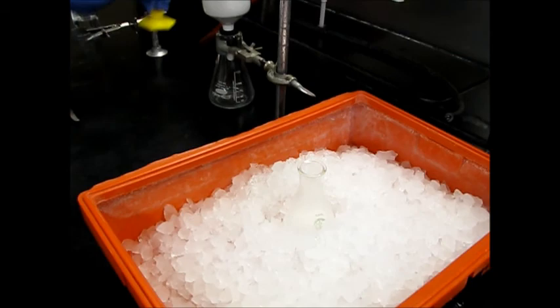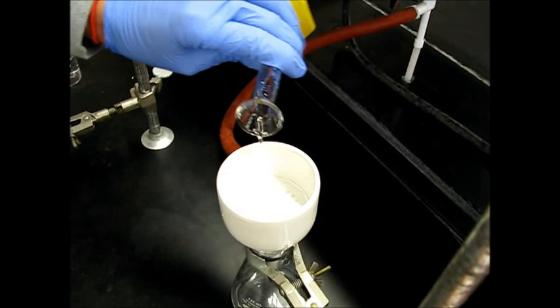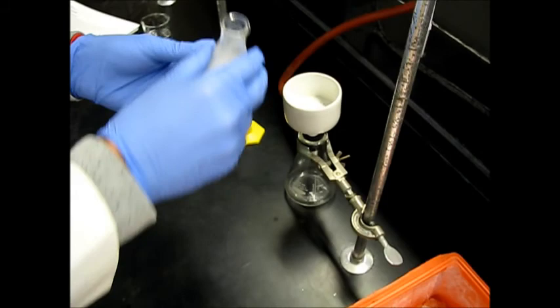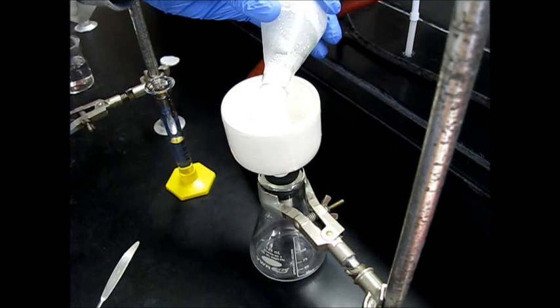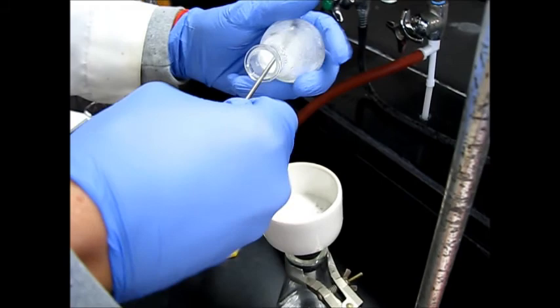We're going to wet our filter paper using water. Just to get a good seal. Then we're going to pour our product into here. Then we can scrape out anything stuck.